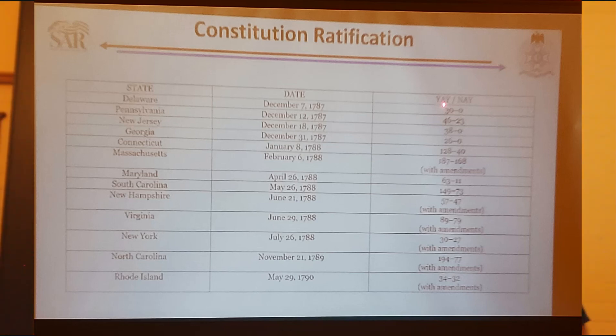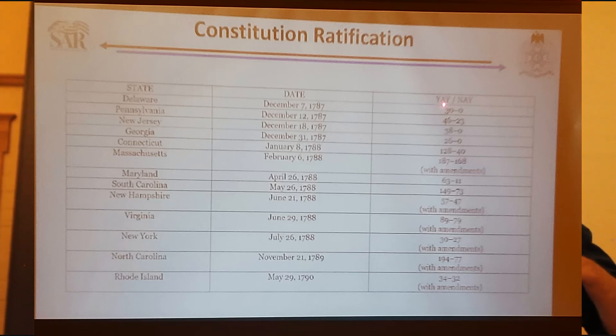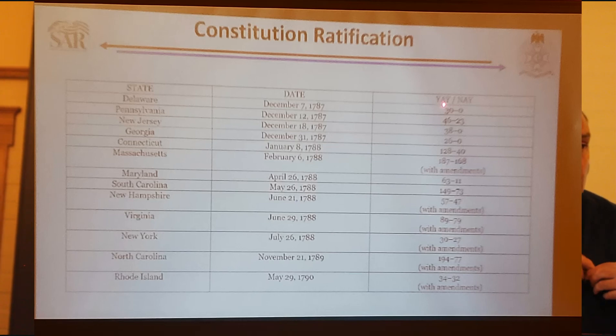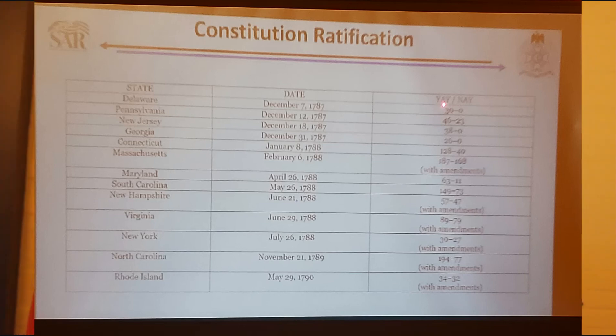You notice the column that says 'with amendments'—a lot of the states wanted amendments added to the Constitution and wanted to make their acceptance of it conditional on those amendments being added. But Washington and Madison told them flat out: no, you have to accept it as written, in total. All these votes were based on the Constitution as written.